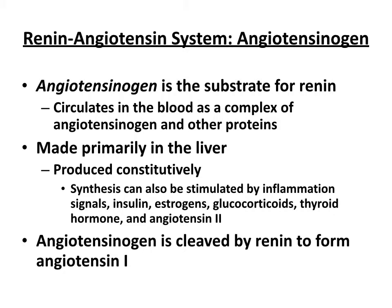I'm going to go through each of the main players in this system. Angiotensinogen is the substrate for renin that ultimately you're going to make angiotensin with. It circulates in the blood as a complex of angiotensinogen with other proteins. The key thing to know is it's mainly produced in the liver and produced constitutively — so there's always angiotensinogen around to be cleaved by renin. What's not always around in large quantities is renin; that's the thing that gets stimulated.